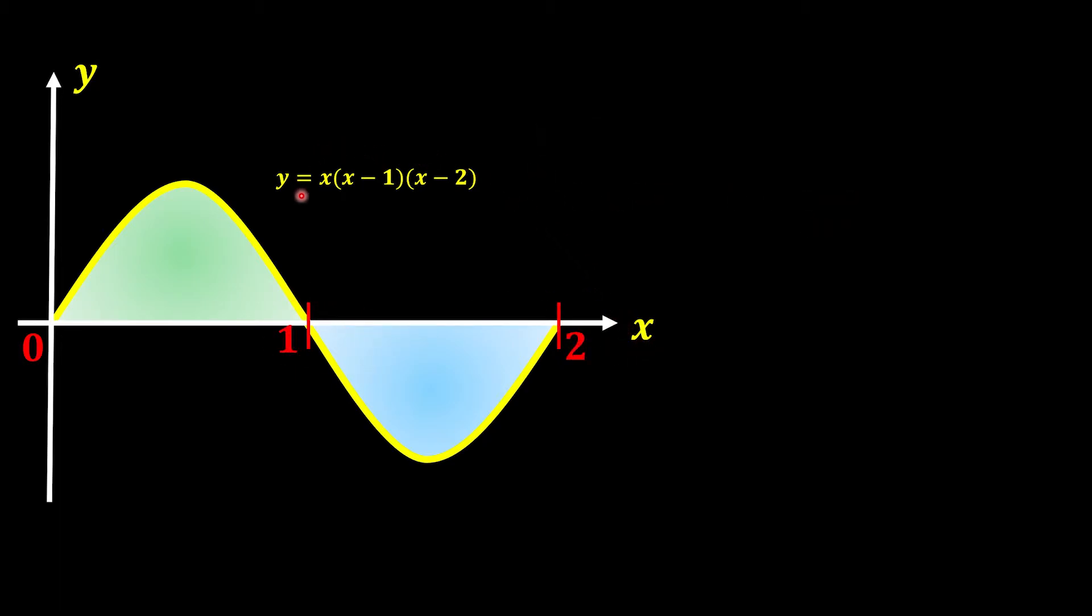After that, we're going to expand our function first so that it's easier for us to do the integration to find the area under the curve. We're going to do the bracket behind first. We have x² - 2x - x + 2, and then we group the like terms x² - 3x + 2. And then we times with the x in front. This is why we have x³ - 3x² + 2x. So after we write down, this is our new equation.